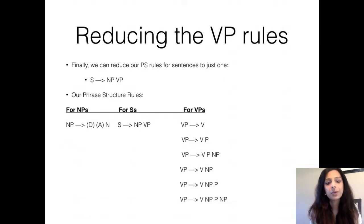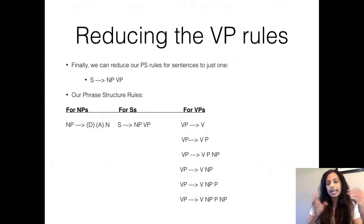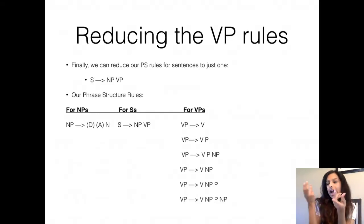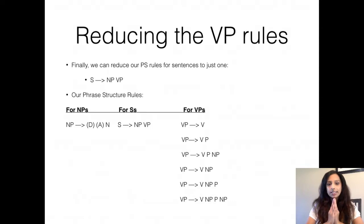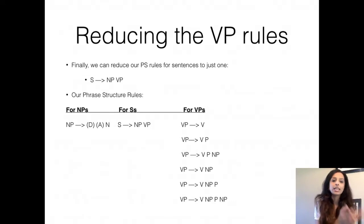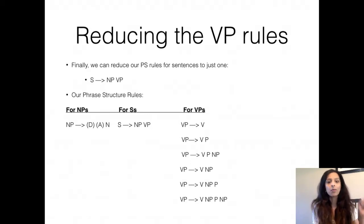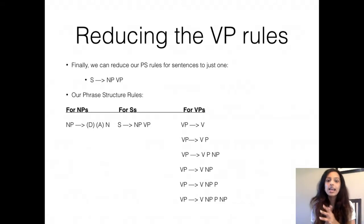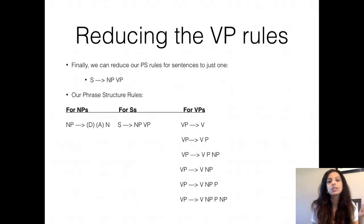Now we can actually reduce our two different sentence rules — S goes to NP-V and S goes to NP-V and NP — to just one rule, because the V and the NP together is your VP. So we can combine the two sentence rules into one: the sentence can be formed of an NP and a VP. S goes to NP VP. So now we have one rule for noun phrases: NP goes to an optional D, an optional A, and an N. And you have your rule for the sentence: S goes to NP and VP. And then all these different rules for VP.